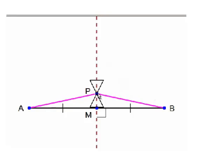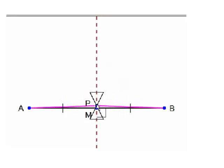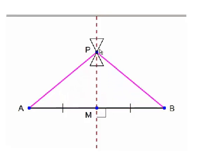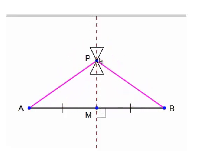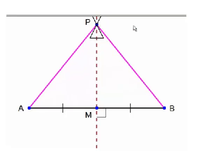I wanted to show that if you slide point P up and down the perpendicular bisector, PA and PB are clearly congruent, so is AM and BM.